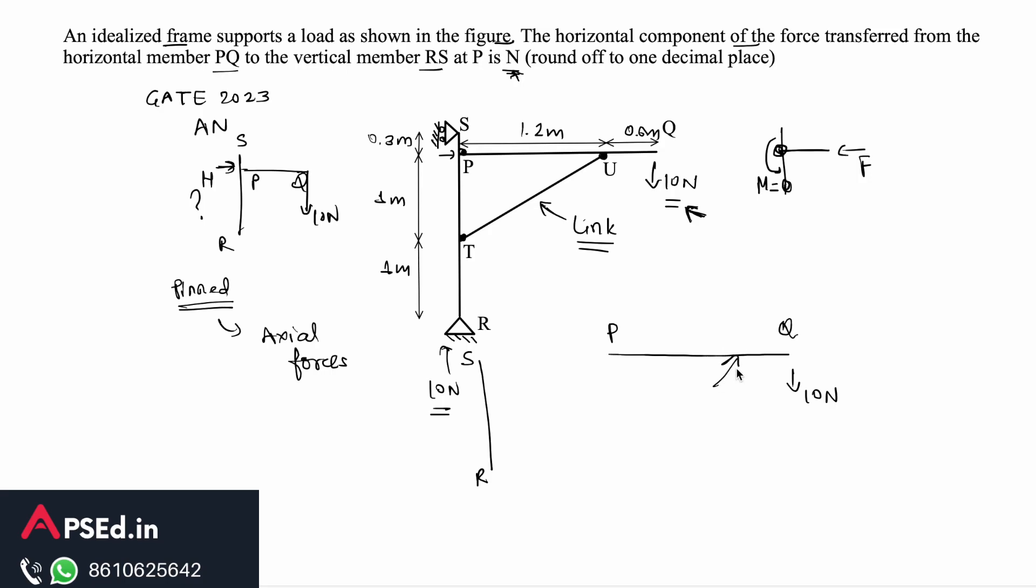So we have this member PQ, and at this point U there will only be an axial force, so let's say there is a reaction R. On this point P there will be vertical reaction, so let's say vertical reaction is Vp and the horizontal force here is H. This is what we have if we draw the free body diagram.